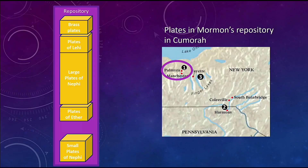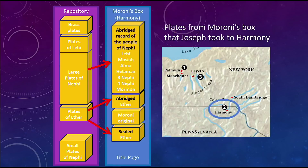The plates in the repository stayed in Cumorah in Palmyra. The plates from Moroni's box Joseph took to Harmony, because of the persecution and because he needed peace and quiet to translate. He arranged with his father-in-law to move down to Harmony. They put the plates in the bottom of a barrel of beans and covered them up — ruffians were looking for what would be over a million dollars worth of gold in today's terms. They put them in the beans and they didn't find them.